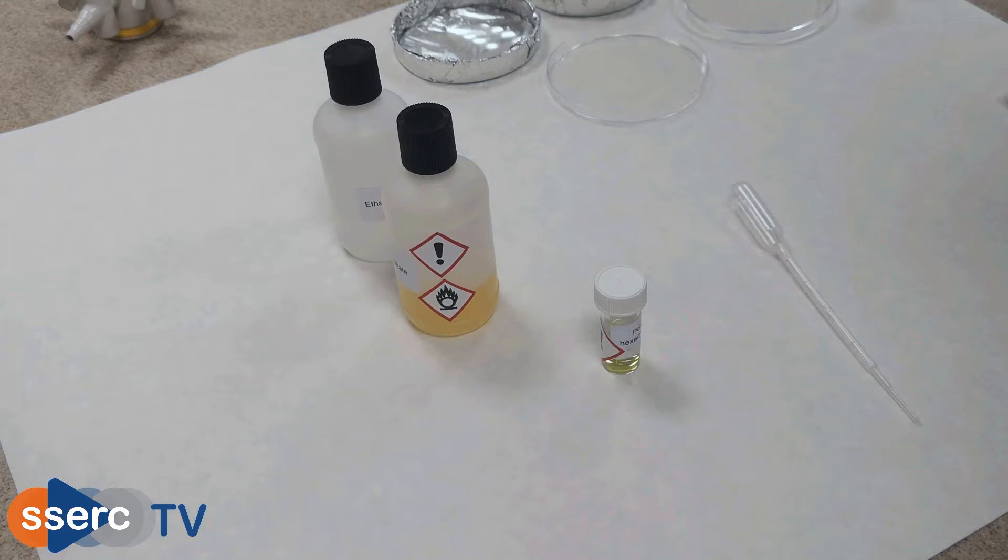Prior to where this video starts I've prepared the solutions. I added 40 milliliters of water to each of the bottles and have shaken to dissolve the iron nitrate and ethane dioic acid, and I also added two cubic centimeters of water to the potassium hexacyanoferate in the bijou and shaken to dissolve as well.